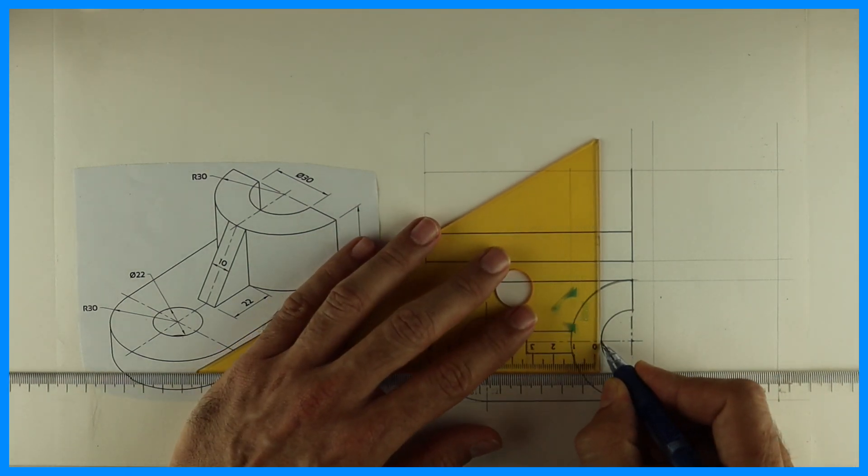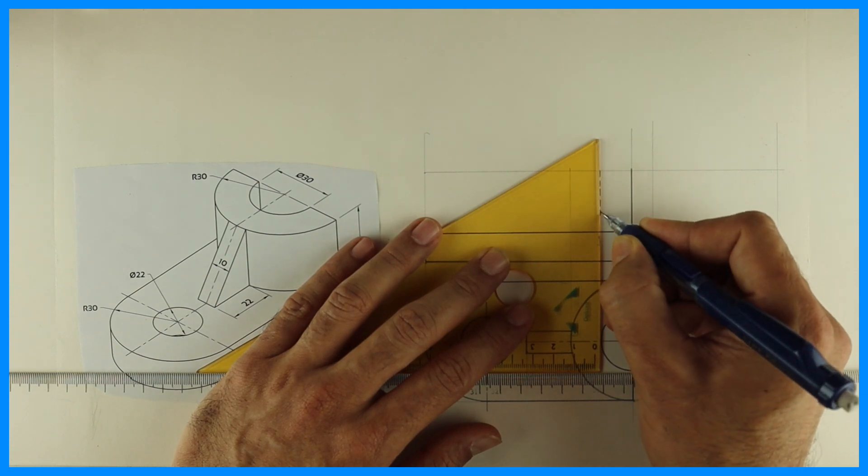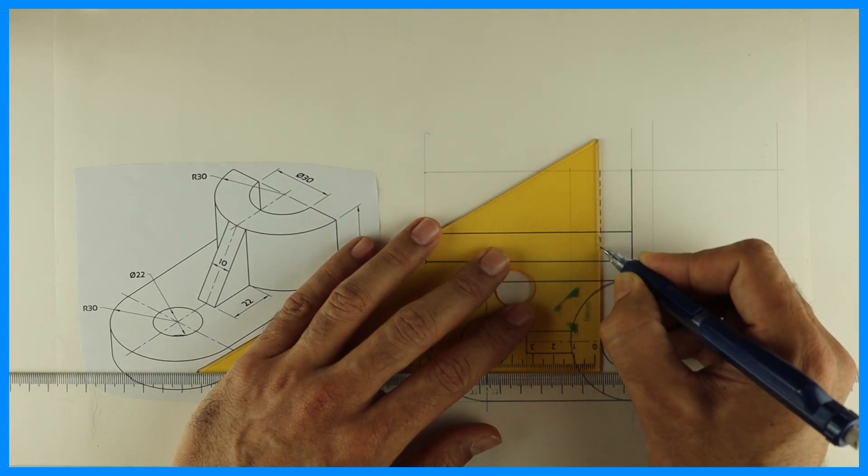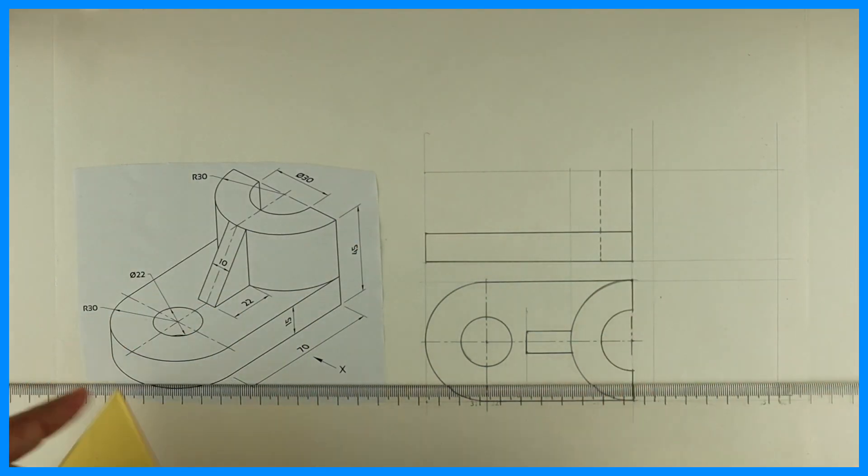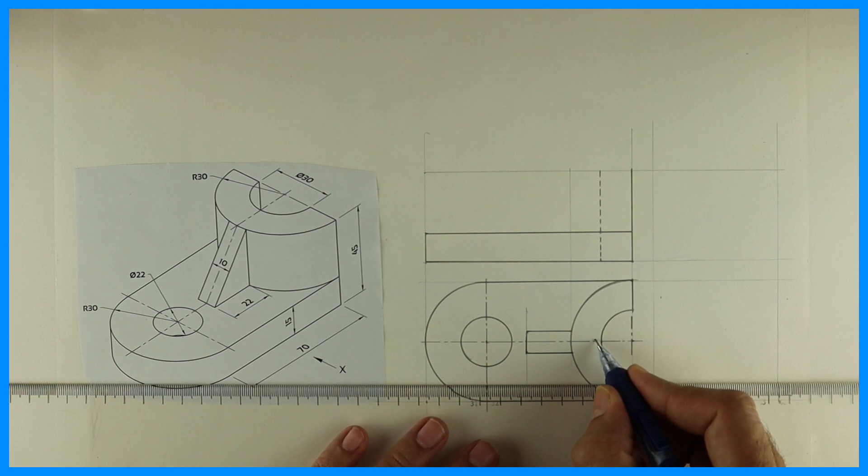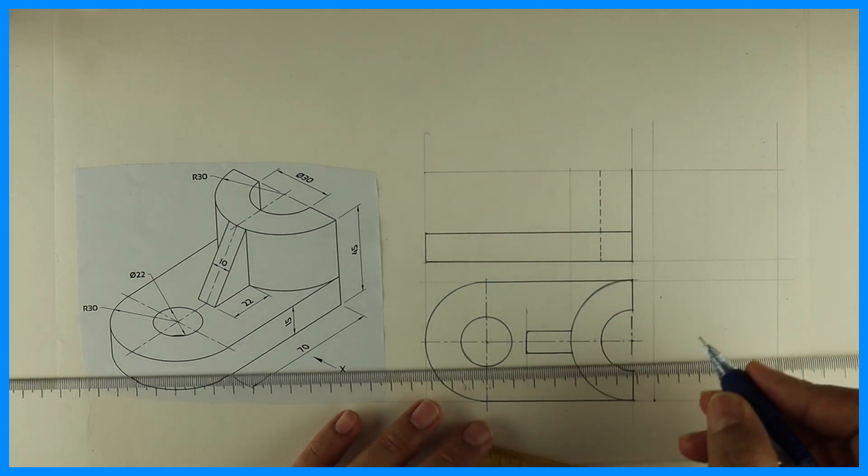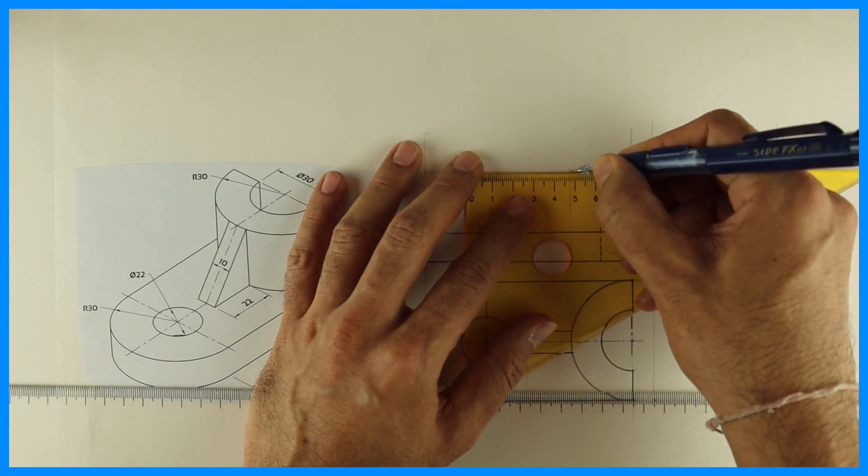Then inside circle, we'll have dotted line. This is extreme left point of the circle. See this, extreme left point. Now this is full dark.